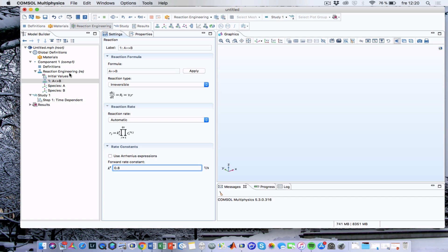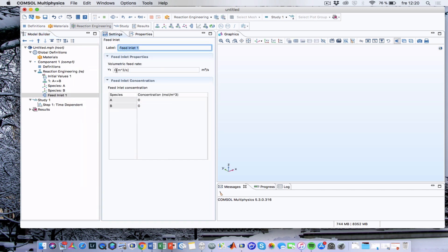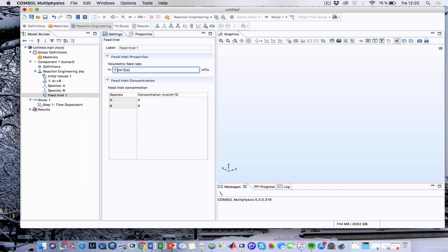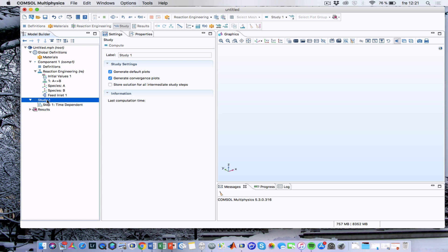We now see that COMSOL automatically has defined species A and species B. The next thing to do is to define the feed inlet with a volumetric flow of 7 and an input concentration of A of 0.9. There is no B in the input. We should also specify the initial values. And they are both 0, since we start with pure solvent, to which we add A.